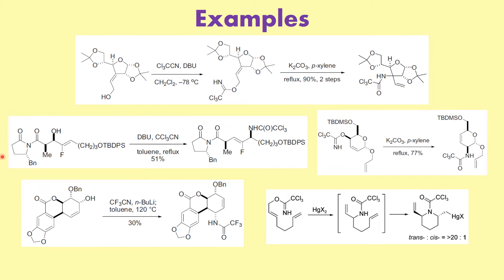In this particular case, we can clearly see that we have this allylic alcohol. You treat it with DBU and trichloroacetamide in toluene under reflux, forming the intermediate. Then after the 3,3-sigmatropic rearrangement you can clearly see the product.